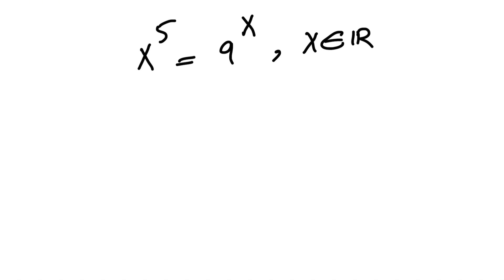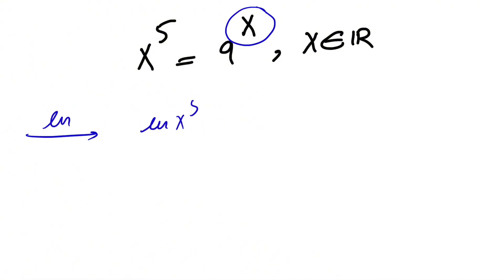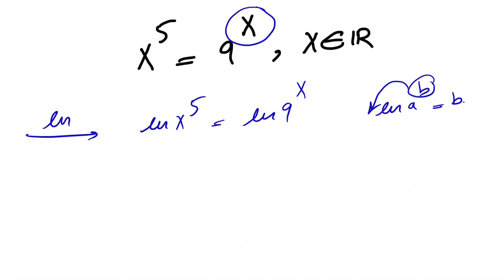Looking at the equation, we can see this is something we can definitely use the Lambert W function to solve. Since we have x in the exponent, we'll take a logarithm on each side. Since it looks like we can solve this with the Lambert W function, let's go with the natural log. We'll have the natural log of x to the 5 equals the natural log of 9 to the x. From the laws of logarithms, ln(a^b) = b·ln(a).